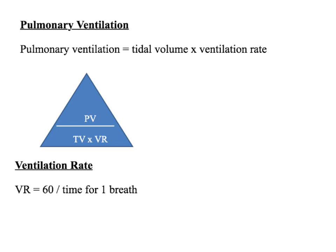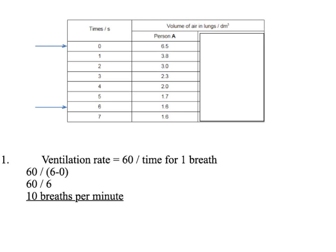Similar to how we calculated heart rate individually before, you might need to calculate ventilation rate or breathing rate as 60 divided by the time taken for one breath, because there are 60 seconds in a minute. This time using a table: we need to work out the breathing rate. The time for one breath is 6 seconds (the difference between 0 and 6), as the person has stopped breathing out because the volume doesn't change after that. So 60 divided by 6 gives 10 breaths per minute.